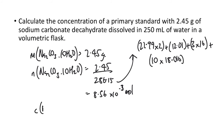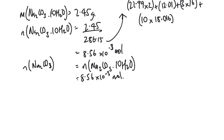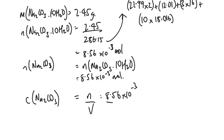Now I need to work out the concentration. First, note that the moles of Na₂CO₃ equal the moles of Na₂CO₃·10H₂O — they're in a 1:1 ratio — so the moles of sodium carbonate is also 8.56 × 10⁻³ mol. Then concentration C = n/V = 8.56 × 10⁻³ ÷ 0.25 = 0.034 mol/L.